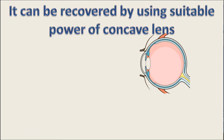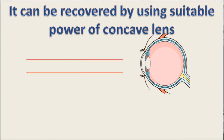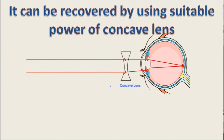It can be corrected by using a suitable power of concave lens. The concave lens diverges the parallel rays of light coming from a distant object so that they focus on the retina, and a clear picture can be seen.